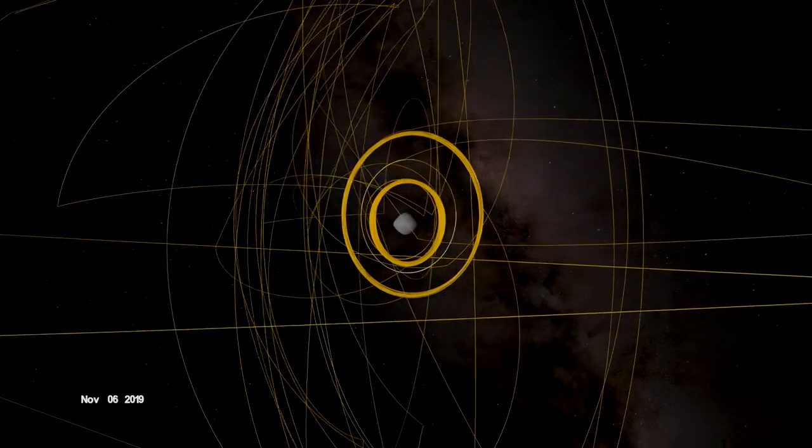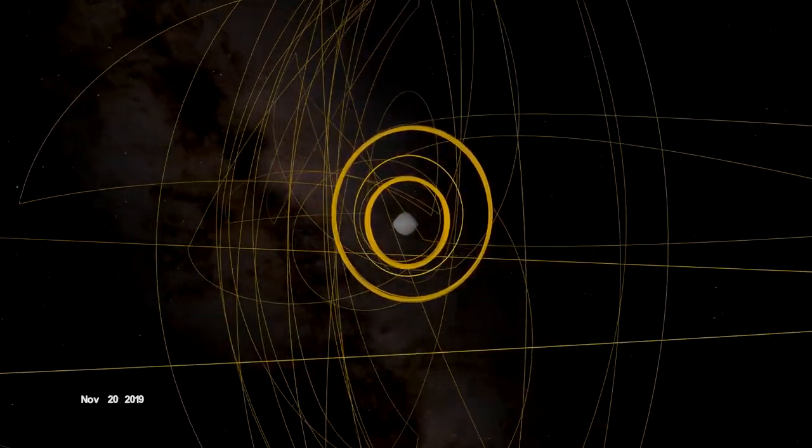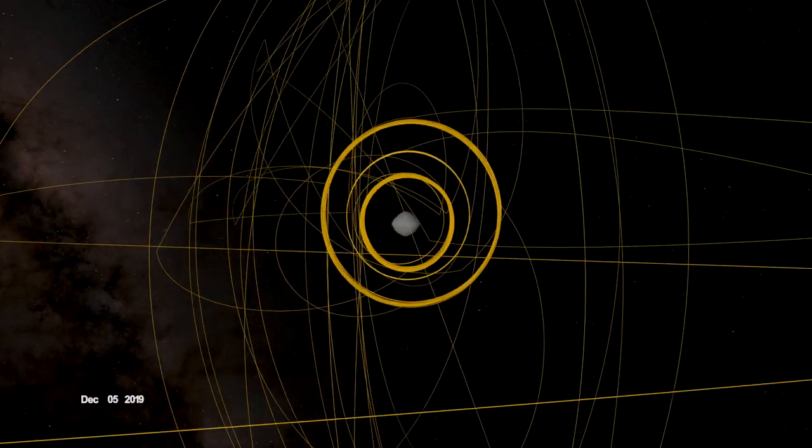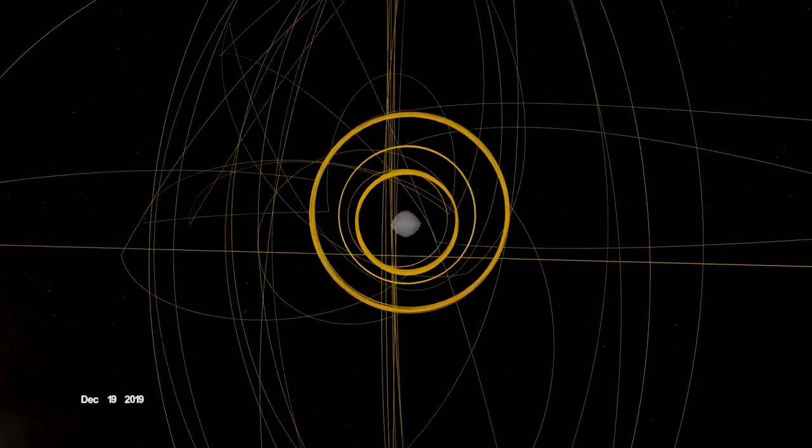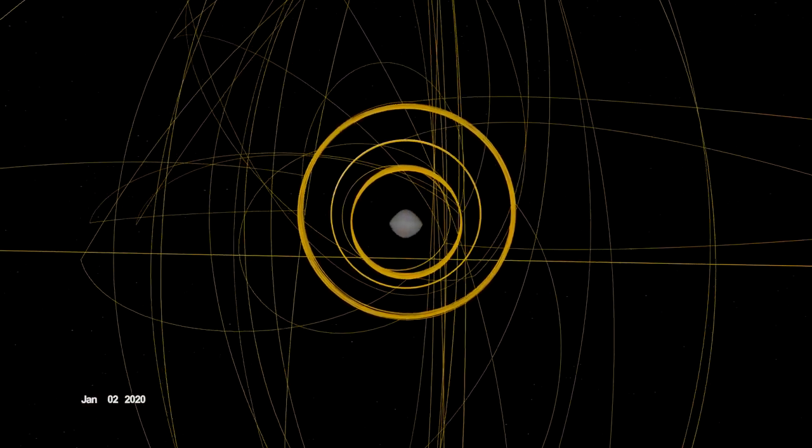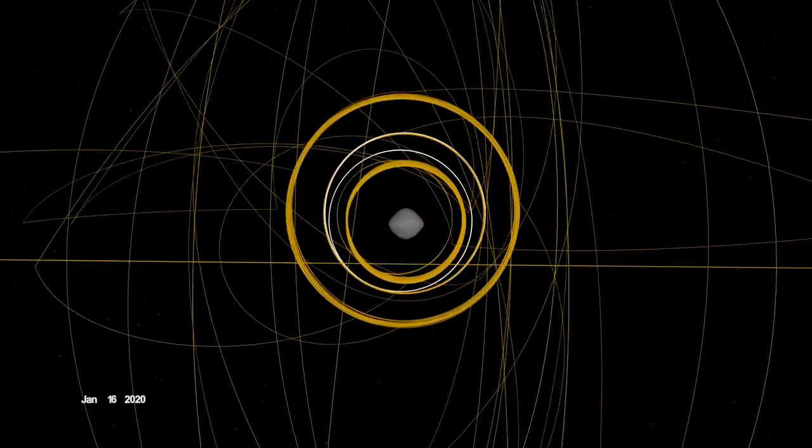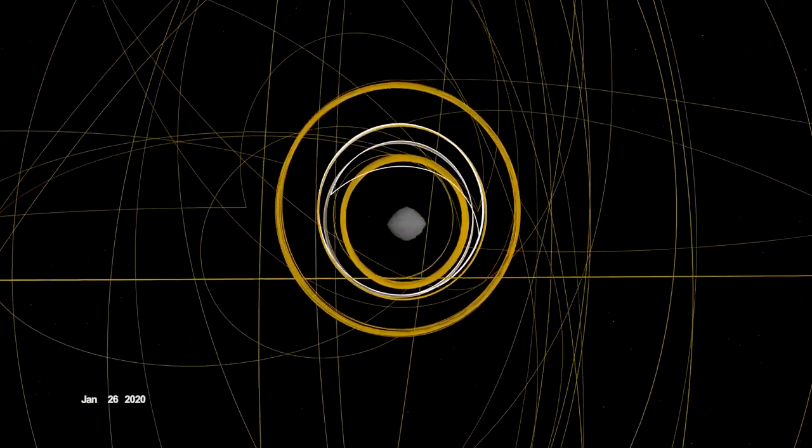OSIRIS-REx concluded its first year at Bennu back in orbit, circling the asteroid's terminator, or boundary, between day and night. Here, outside forces acting on the spacecraft are balanced, allowing it to orbit within the same plane over time.